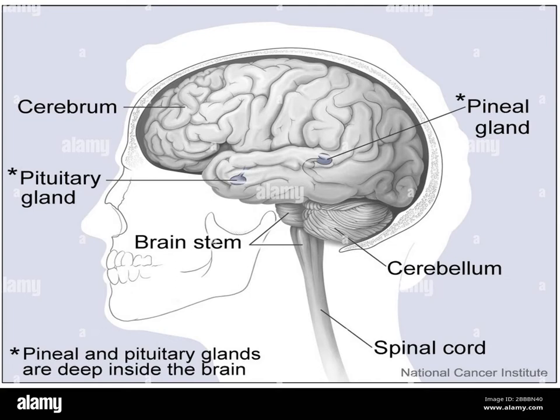The locus coeruleus is a group of norepinephrine-producing neurons in the brain, and it is associated with things like stress, anxiety, and impulsive behavior.